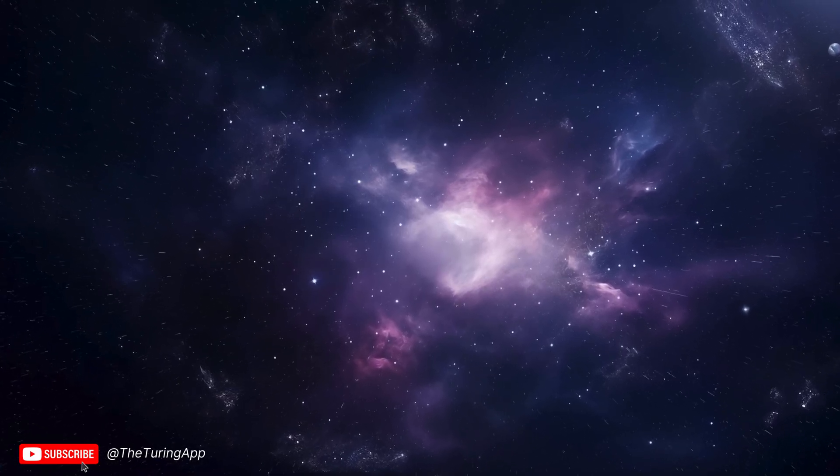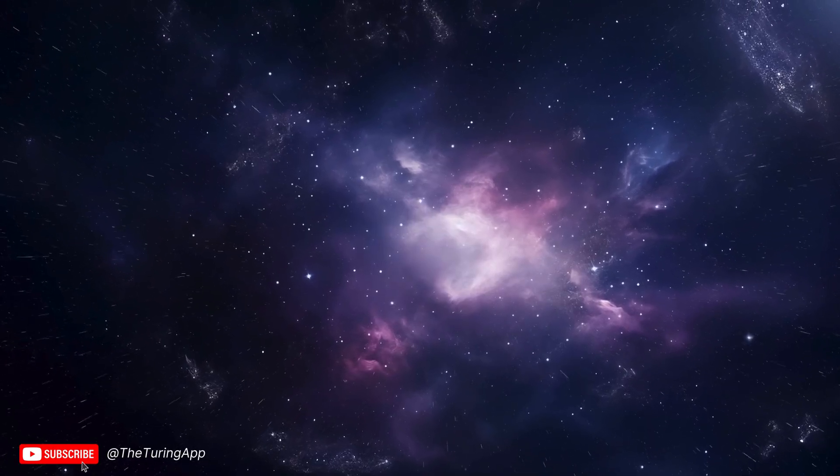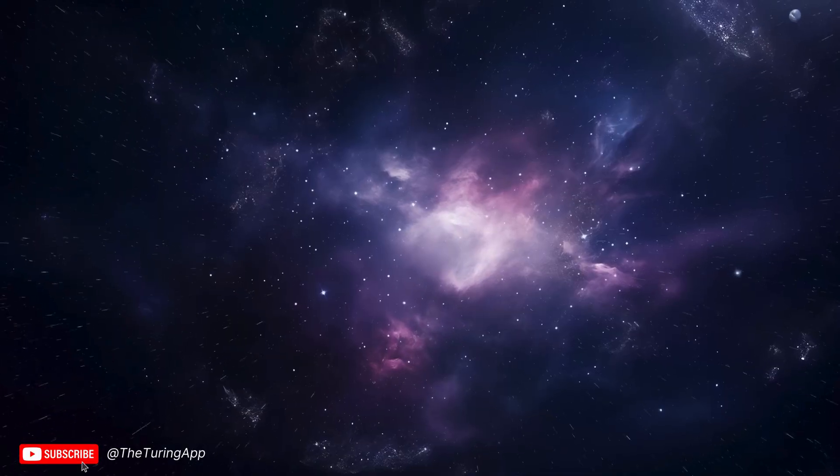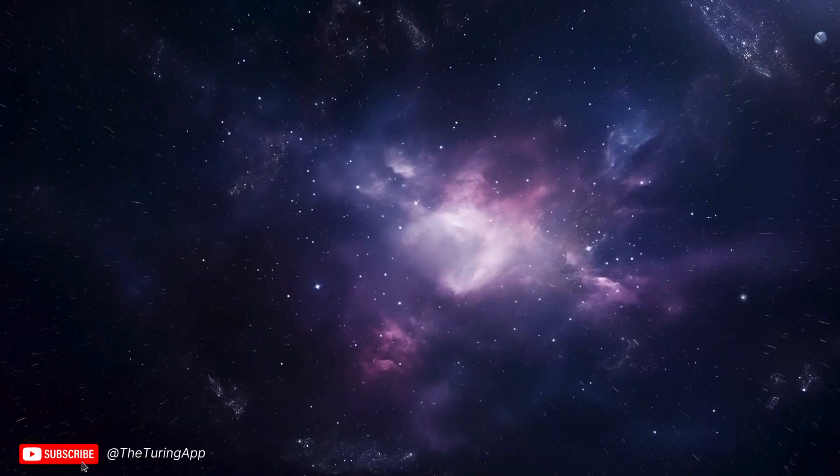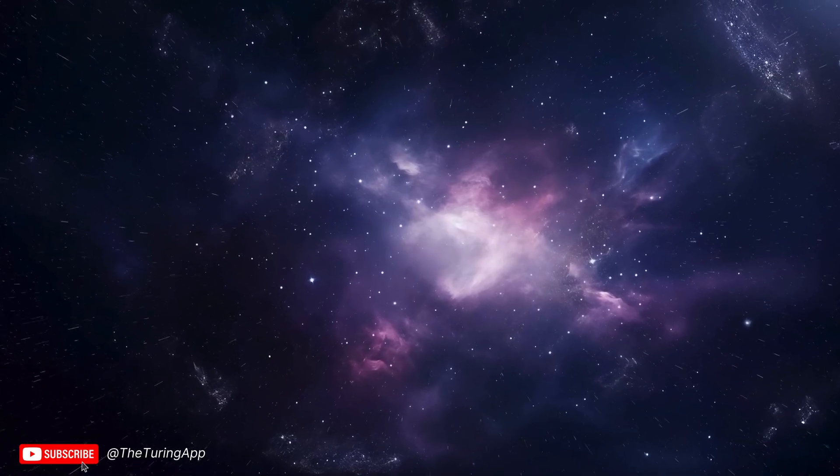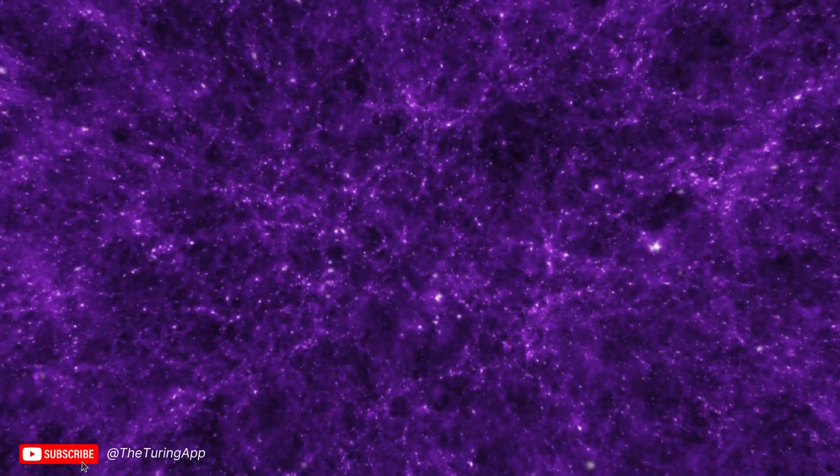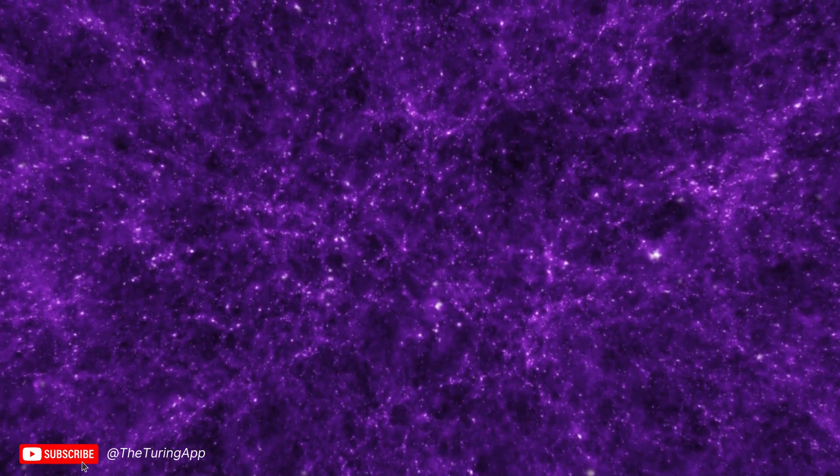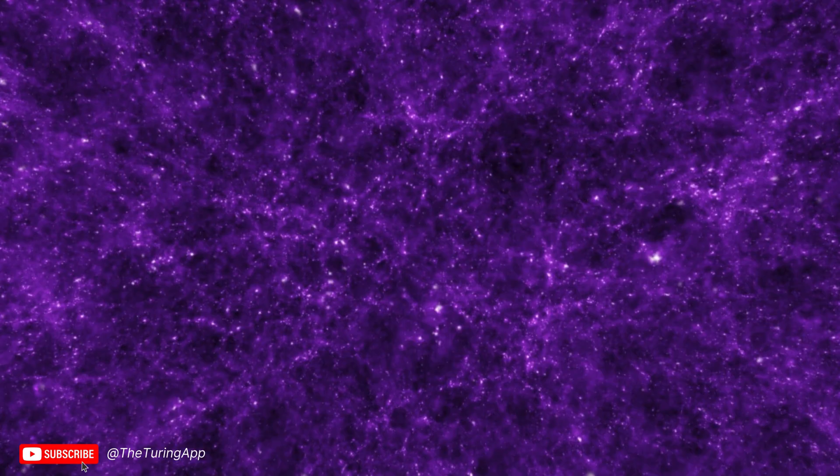The story of cosmic voids begins in the 1970s and 1980s, a time when astronomers were mapping the universe in unprecedented detail. Using redshift surveys to measure the distances of galaxies, they aimed to uncover the large-scale structure of the cosmos. What they found was both extraordinary and haunting. As they charted the heavens, patterns began to emerge. Galaxies weren't scattered randomly. Instead, they formed intricate filaments and clusters, weaving together into what is now called the cosmic web. But between these glittering structures were vast regions of almost complete emptiness, the cosmic voids. It was as if the universe itself had left behind scars, great swaths of silence amidst the light.